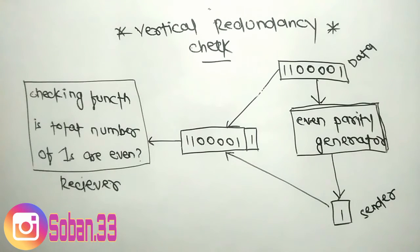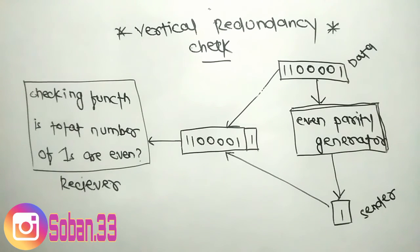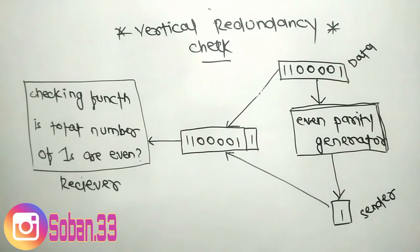Note that for the sake of simplicity we are discussing even parity checking, where the number of ones should be an even number. Some systems may use odd parity checking, where the number of ones should be odd. The principle is the same; the calculation is different.